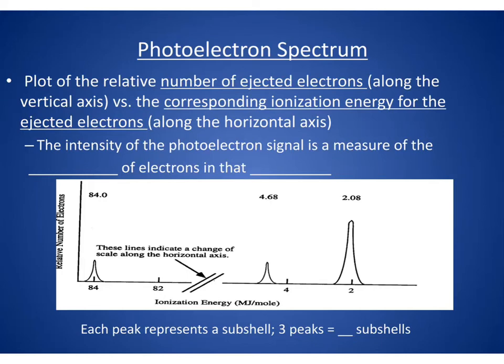In this video, we're going to look at problems dealing with PES, or photoelectron spectroscopy. In these problems, you'll see a spectrum like the one in front of you, and the y-axis will be relative number of electrons, and the x-axis will be ionization energy. And you'll see peaks along the spectrum. However many peaks you have would be how many subshells you have. So if there's three peaks, you would have three subshells.